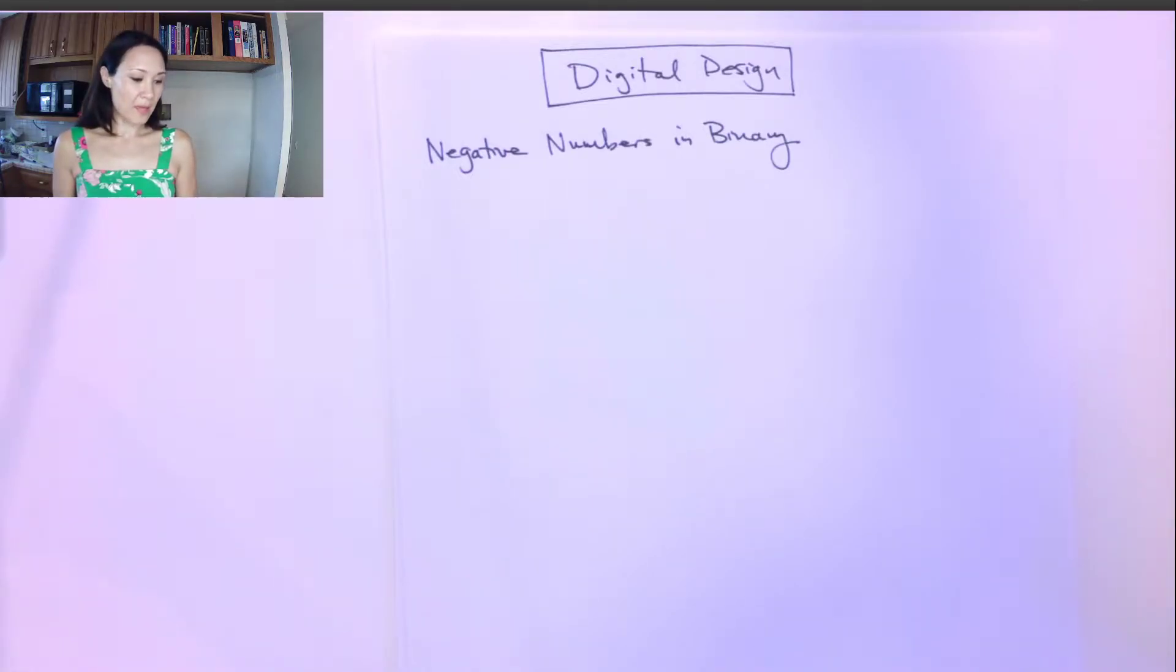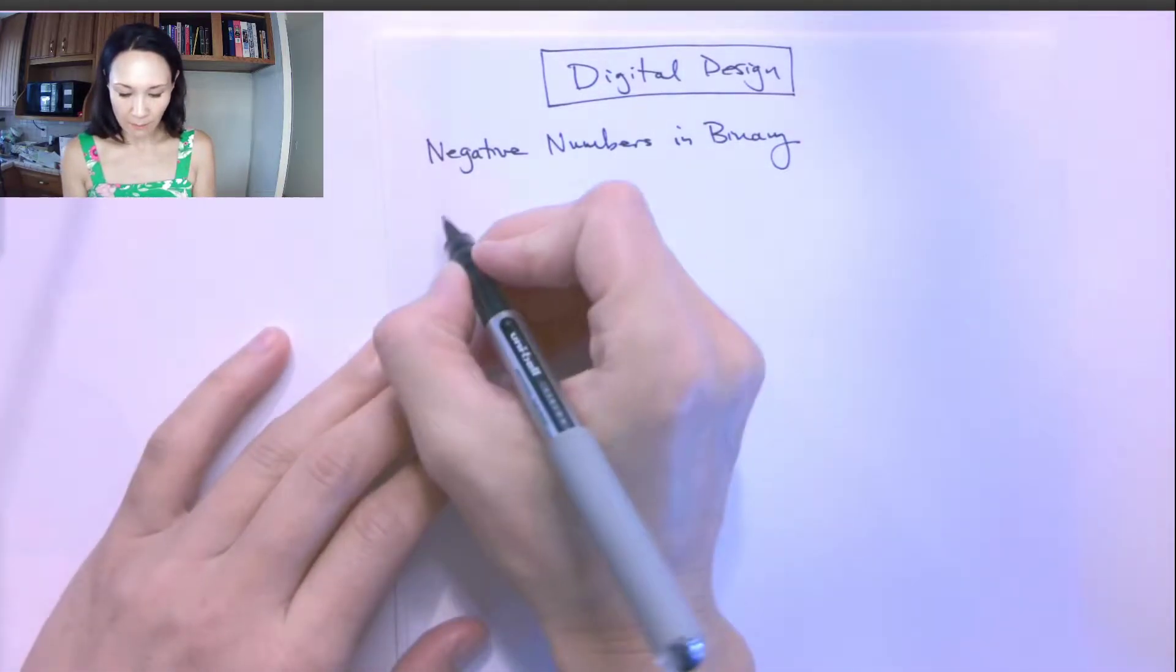Now we can convert mixed floating point numbers to binary and back to decimal, but how do we handle negative numbers? There are three conventions for representing negative numbers in binary.